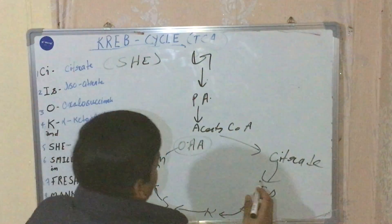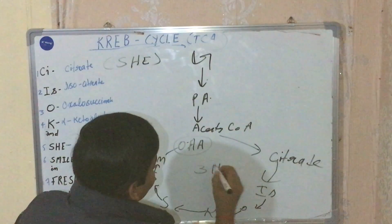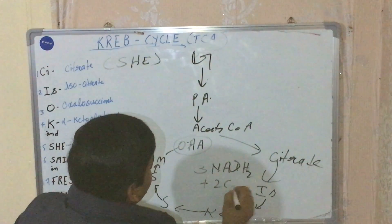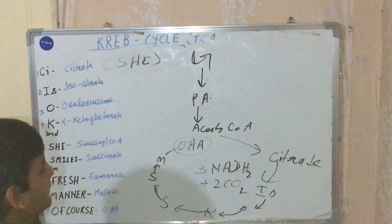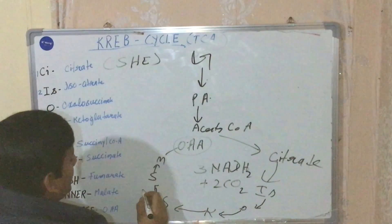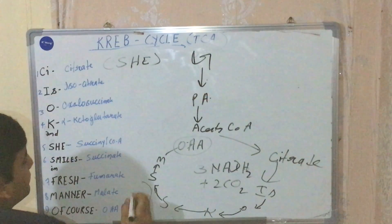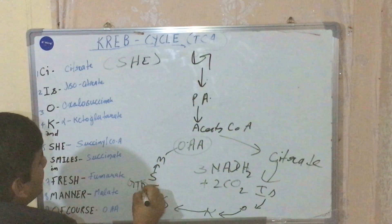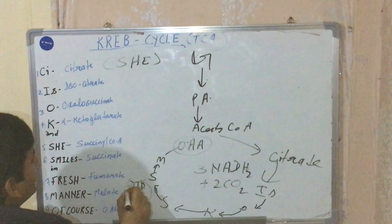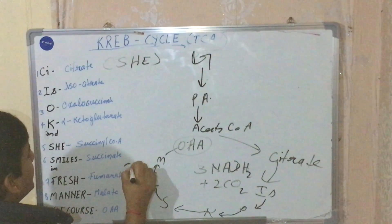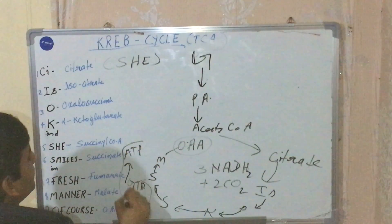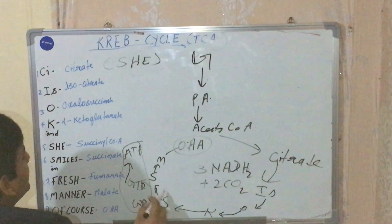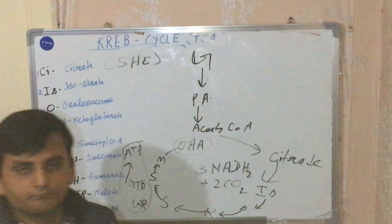The outcomes of the Krebs cycle are 3 NADH₂ and 2 CO₂ evolved. One step of substrate-level phosphorylation also takes place, which gives us GTP from GDP, and this GTP is again converted into ATP. This substrate-level phosphorylation occurs at the step from succinyl coenzyme A to succinic acid. Thank you.